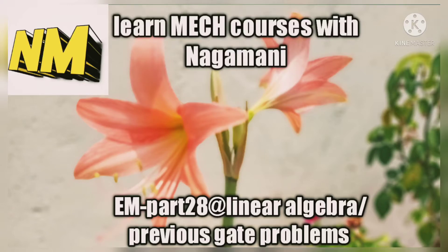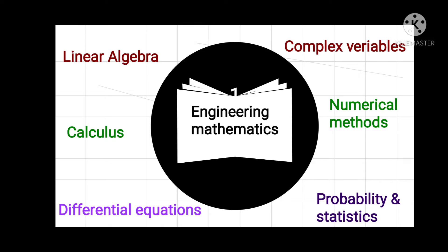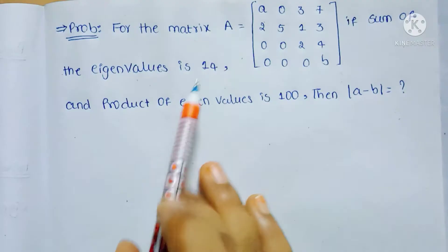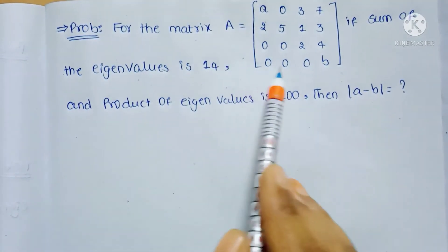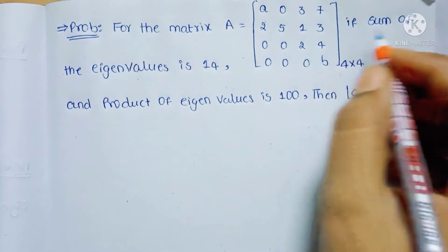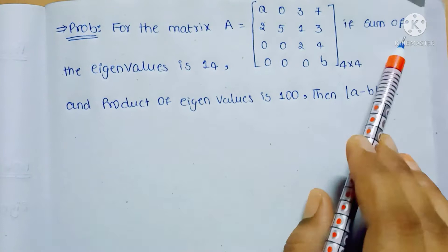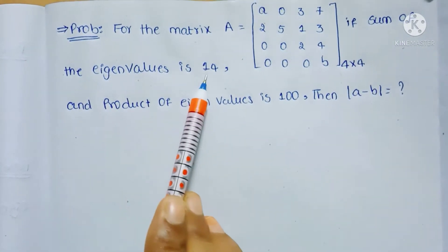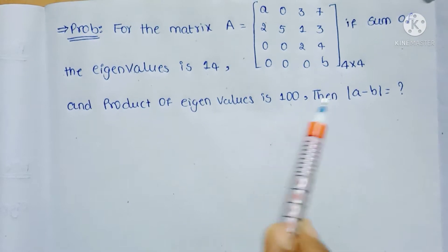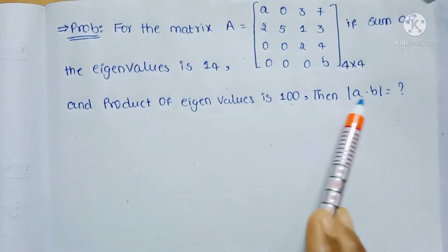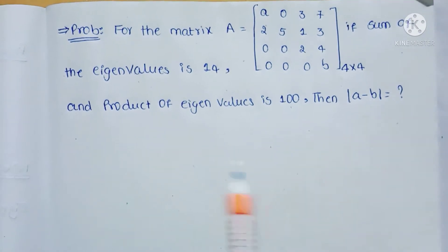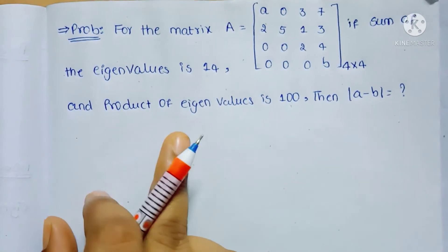Hi friends, welcome to my channel NM Learn — my courses with Nagmani. Today we will see some problems from previous GATE exams. Here they are given a 4 by 4 matrix with some conditions: the sum of the eigenvalues is equal to 14 and the product of the eigenvalues is 100. Then, the modulus of A minus B equals how much?